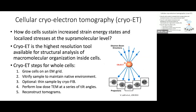To perform cryo-ET on cells, you grow the cells on EM grids and vitrify the samples. Because electrons need to pass through the sample, the total thickness has to be below about 500 nanometers, so sometimes thinning the sample by cryo-FIB is required. Electron microscopy is then performed at a series of tilt angles, creating a series of projections from which a 3D view of the sample — a tomogram — is reconstructed.